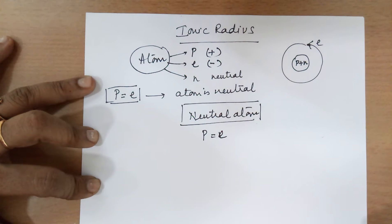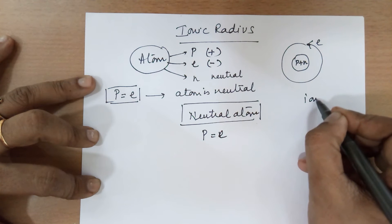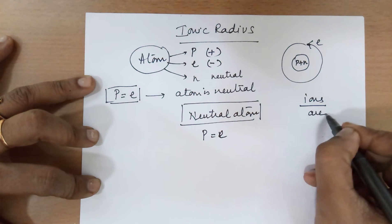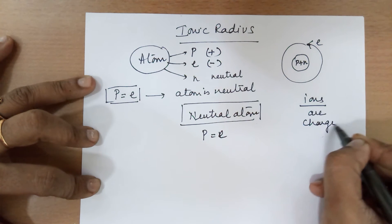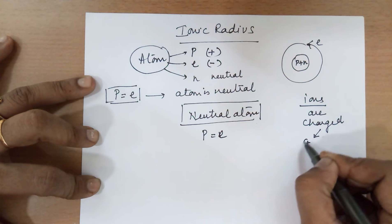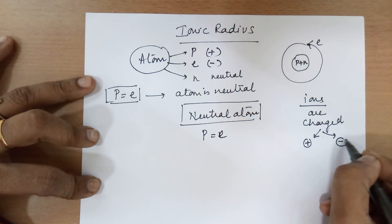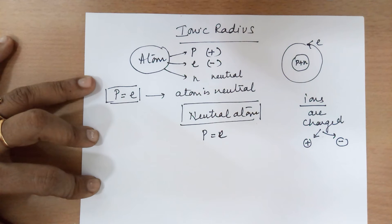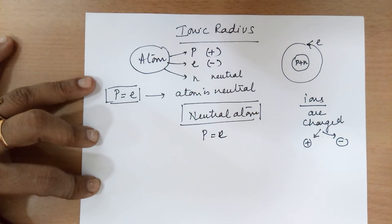For the formation of ions — ions are charged, and they can be positive in charge as well as negative in charge. For positively charged ions, we need the positively charged species to be more than the negatively charged species. While for the negatively charged ion, we require the negatively charged species to be more than the positively charged species.